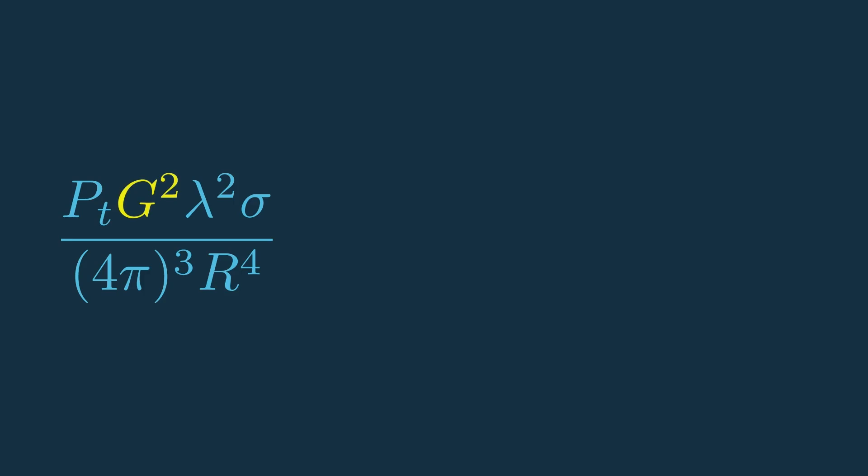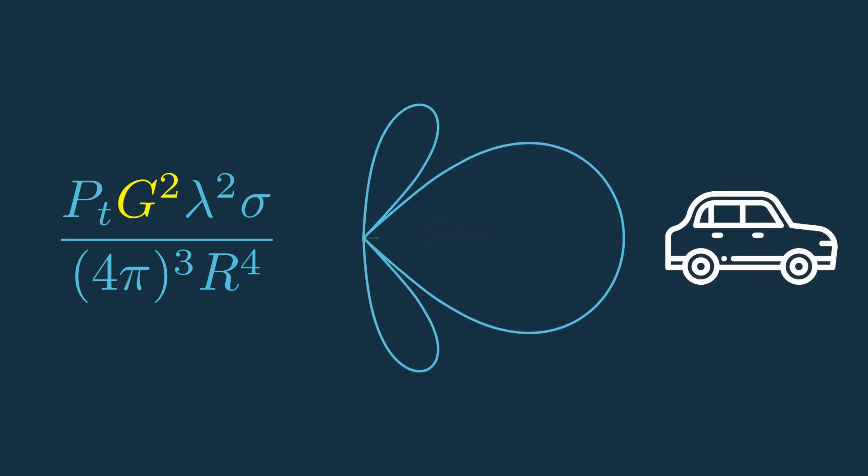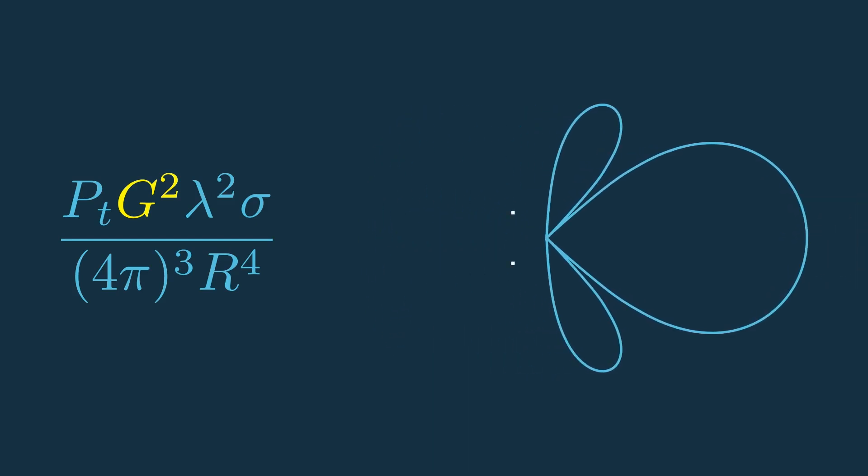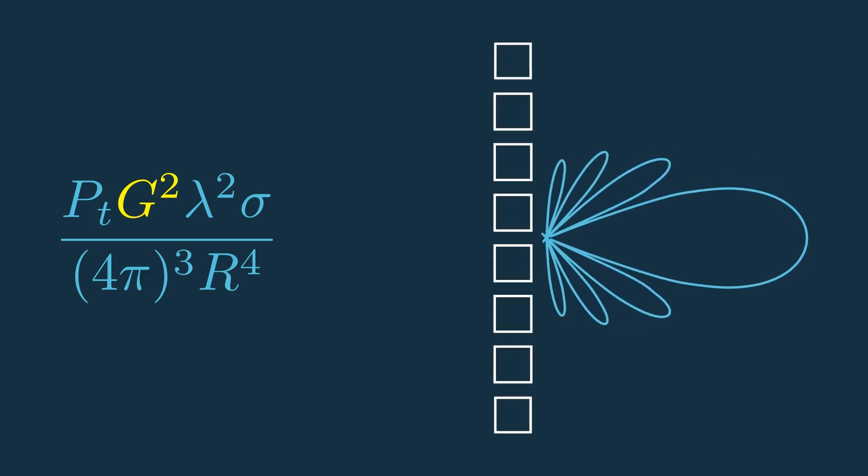You could also increase the antenna gain, which is a measure of how effectively you can direct the radiated power to your target relative to the power that goes in all the other directions. And this can be done in a number of ways. In a phased array, for example, you could increase the number of elements in the array, which would give you a more directed beam and therefore more gain.